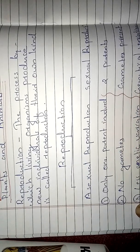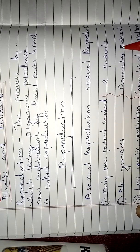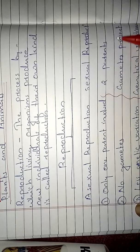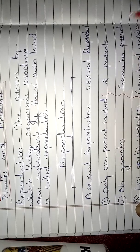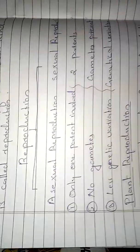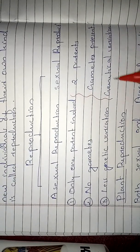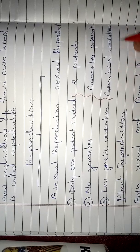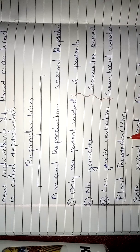In sexual reproduction, gametes are produced — the male gamete and the female gamete. The male gamete is produced from the father and the female gamete is produced from the mother, and they fuse together to form the new individual. The fusion of the gametes also creates genetic variation, so the genetics are improved in the case of sexual reproduction, but this is less so in asexual reproduction.